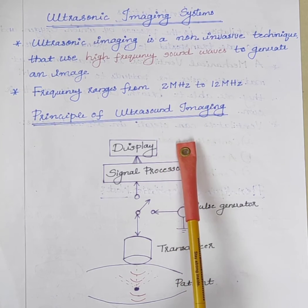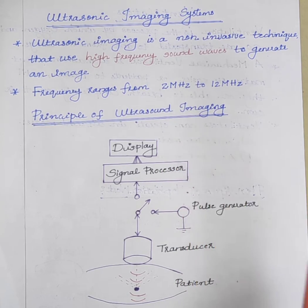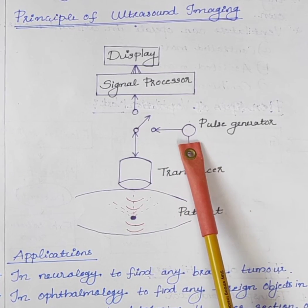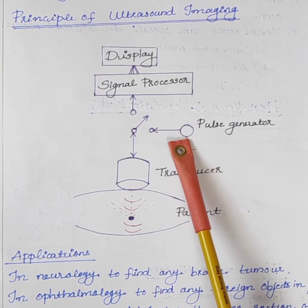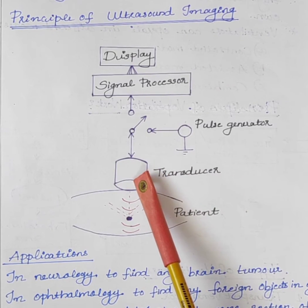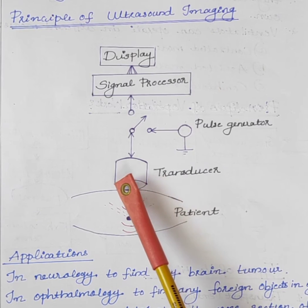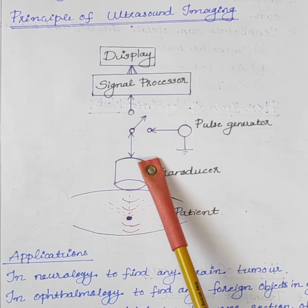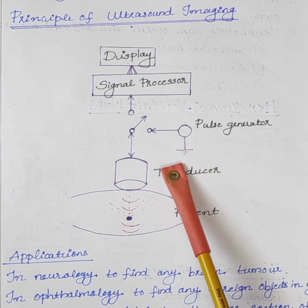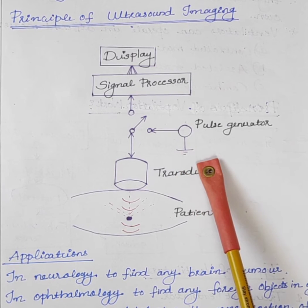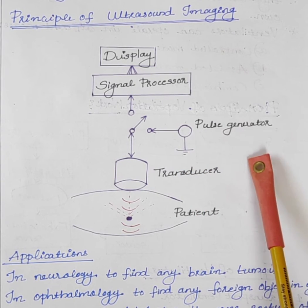Next is the principle of operation of ultrasound imaging. The main principle behind the ultrasonic imaging system is the piezoelectric effect. Here we are using a transducer. The transducer contains piezoelectric crystals. We know that the piezoelectric crystals can act as both transducer and inverse transducer. When an external force or stress is applied to the piezoelectric crystals, it changes its shape and produces an electrical output.